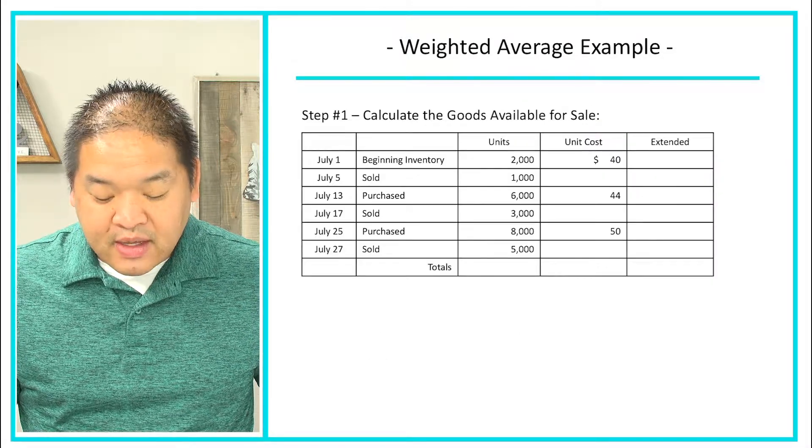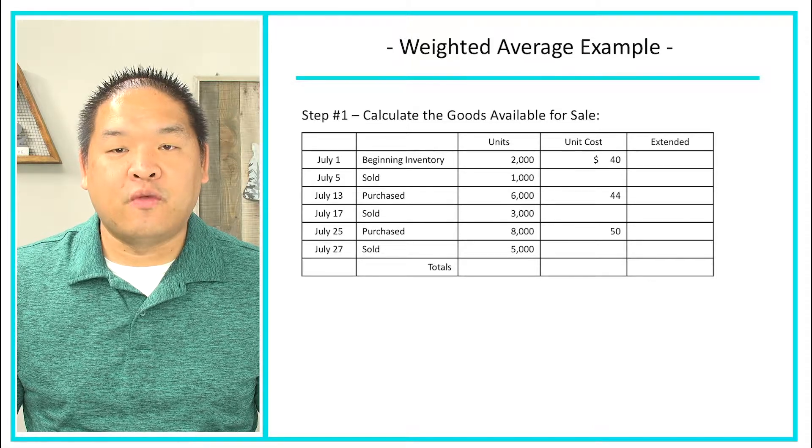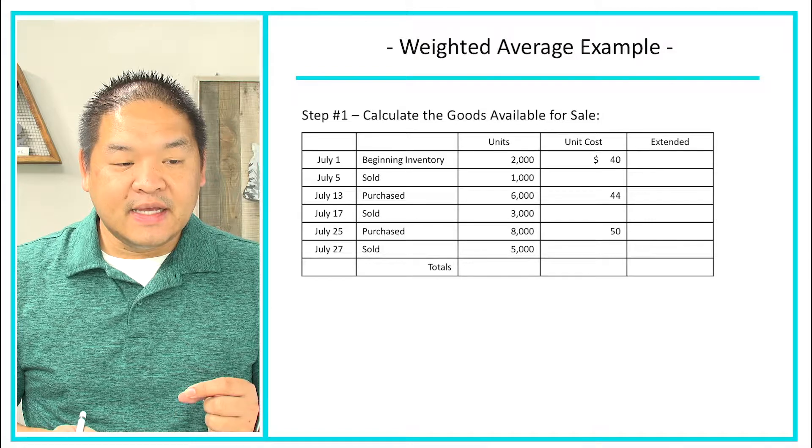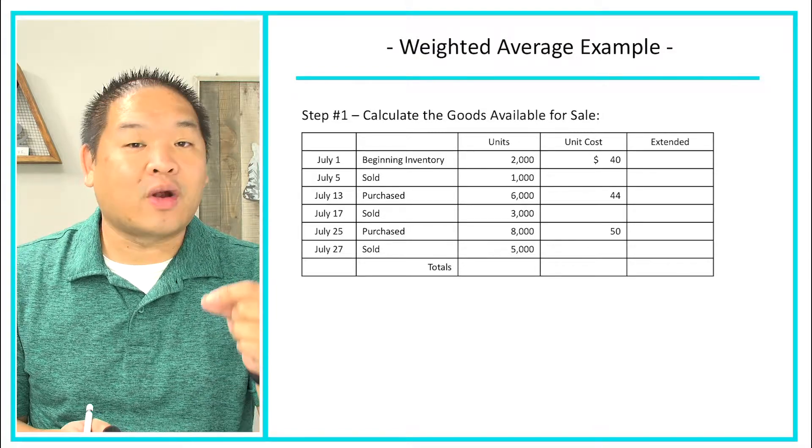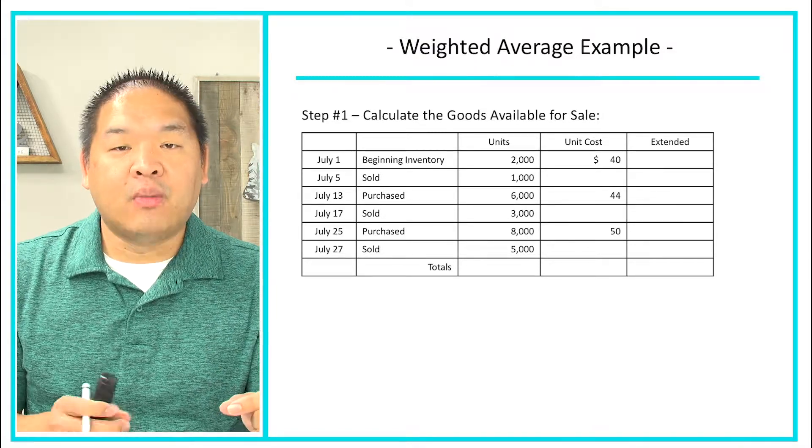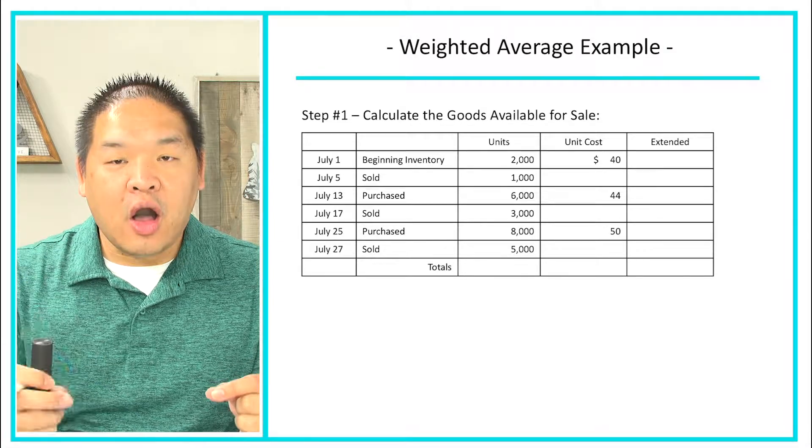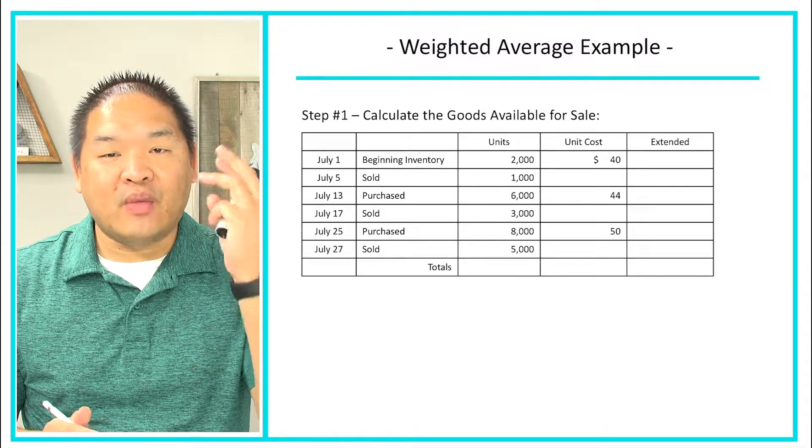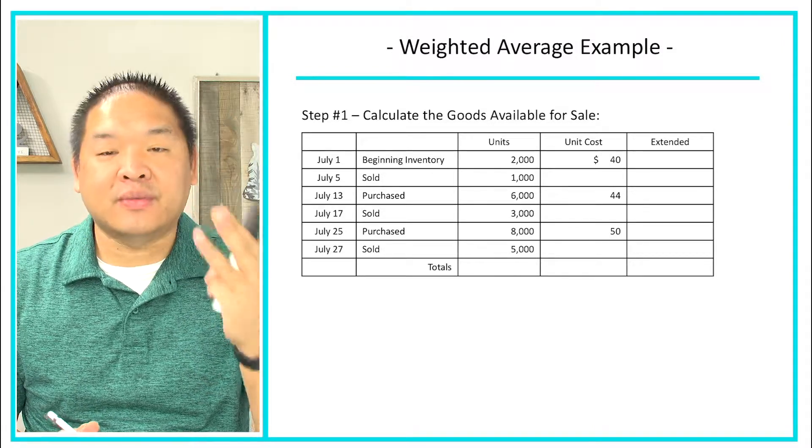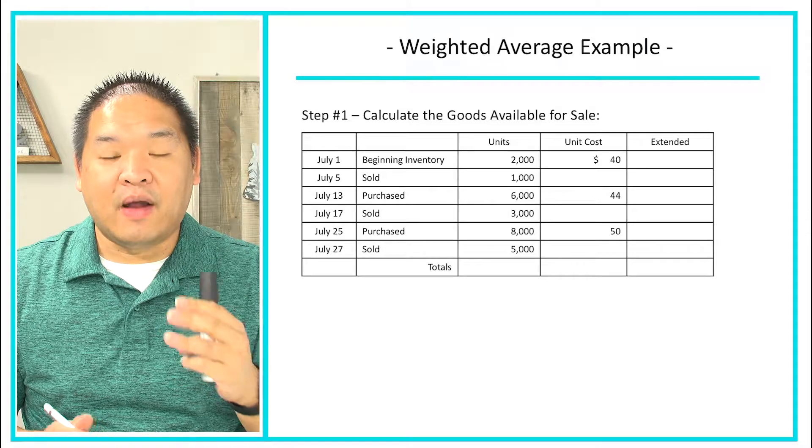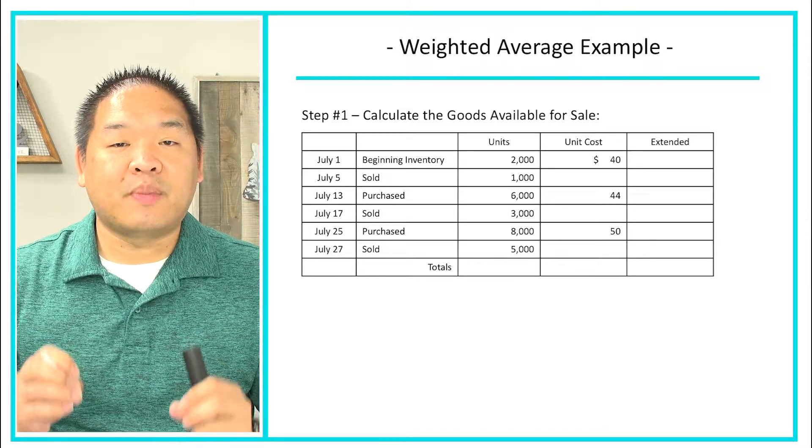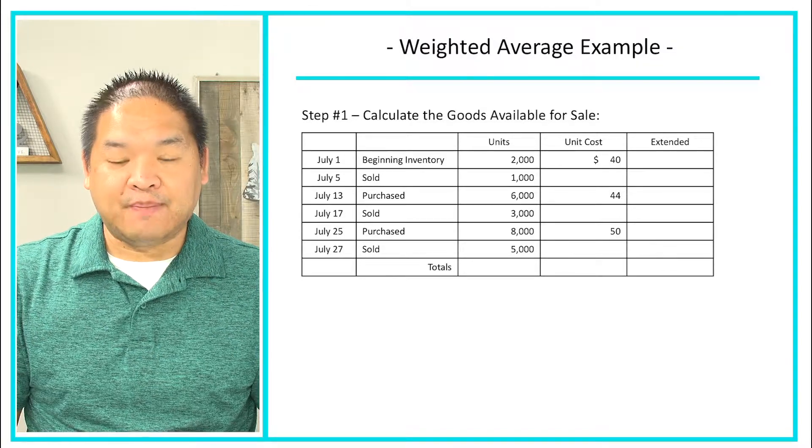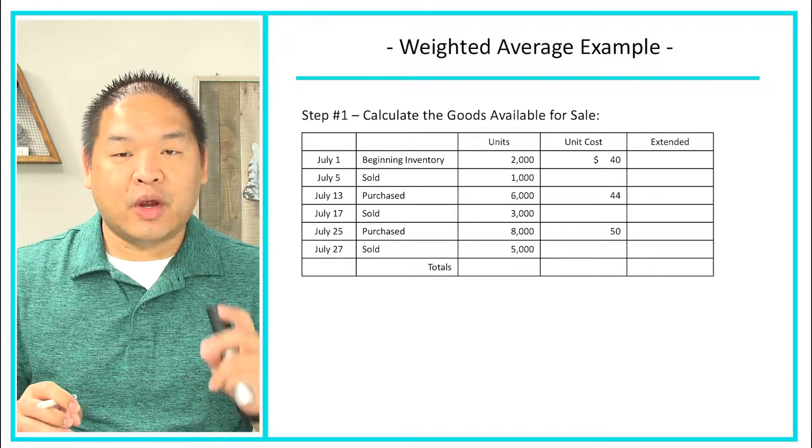Step number one is we're going to need to calculate goods available for sale. Now the way that we calculate goods available for sale is that we need to take the number of units that we have or had during the year and multiply it by its cost to us, the company. So notice here that we have beginning inventory and we have two purchases, so we really have three lines that we care about. The rest of the lines we don't care about because those don't represent inventory that we had or have currently.